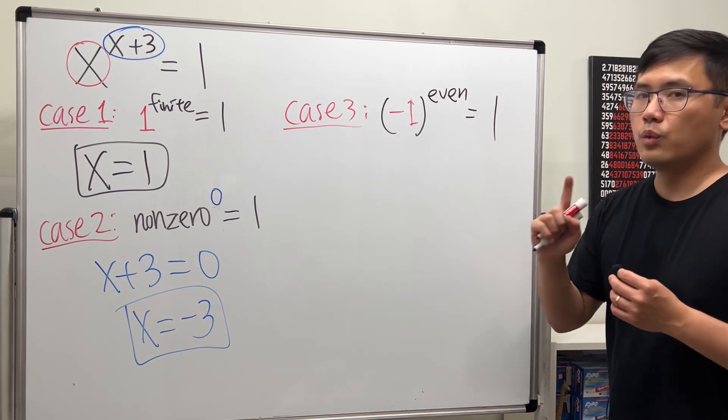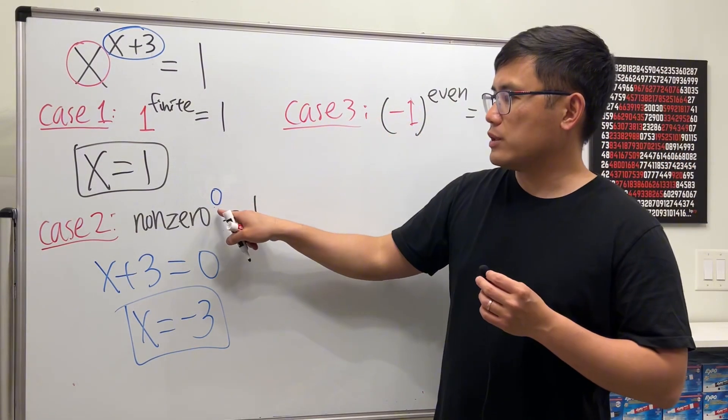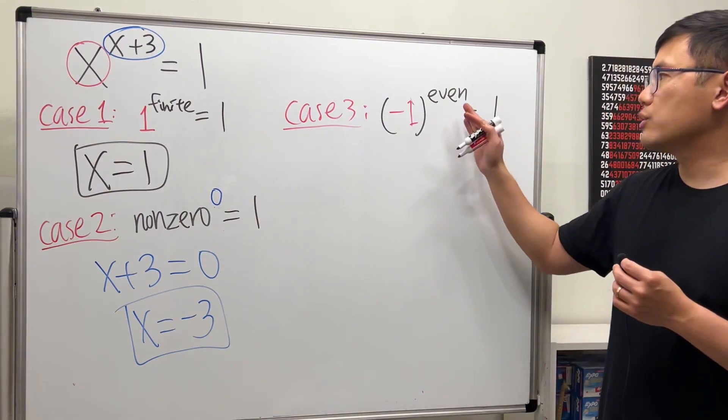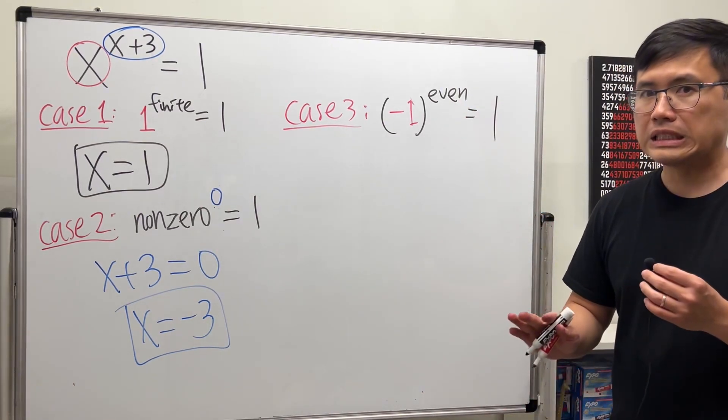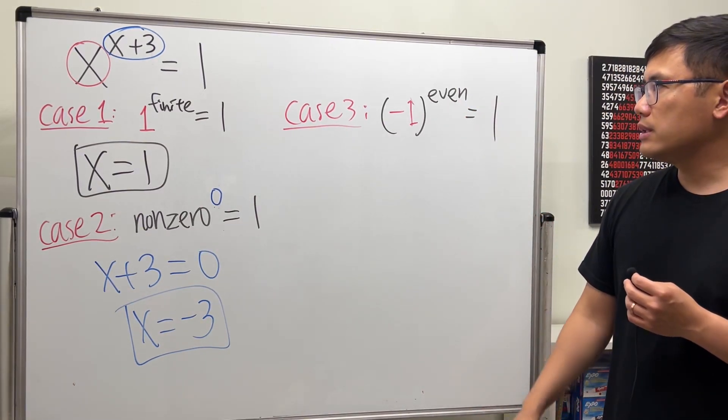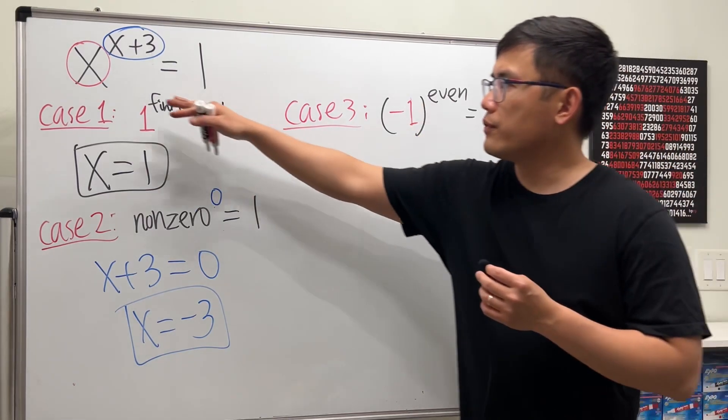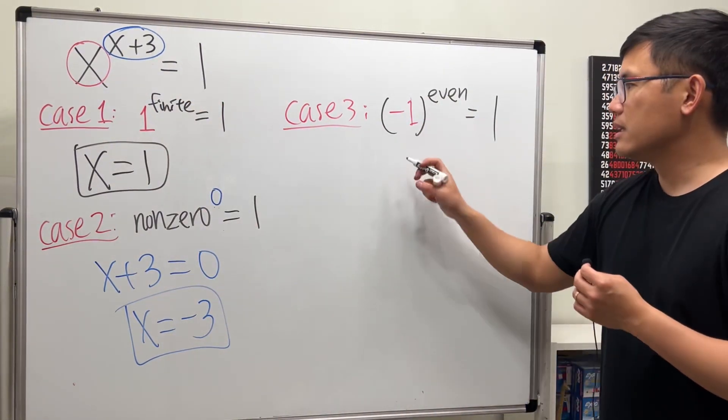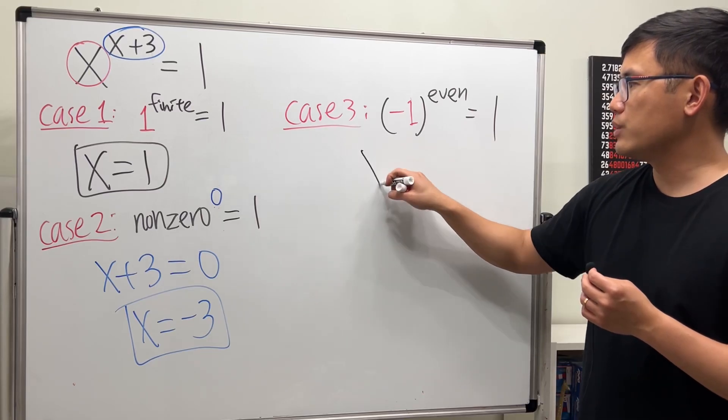And we have the zero case right here already, so let's make sure that this even number is not zero. So in this case, can we put negative one for the base? Yes, this right here is just x is equal to negative one.